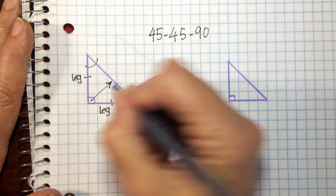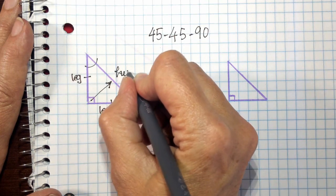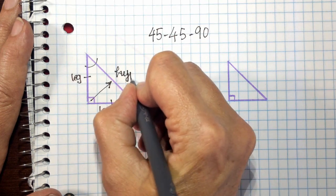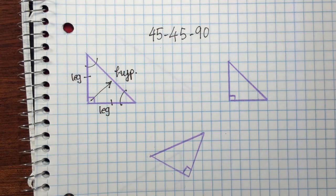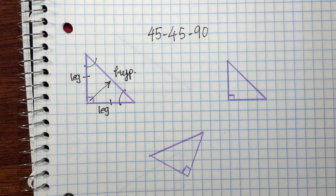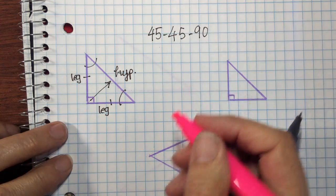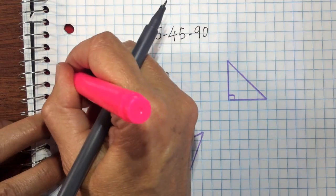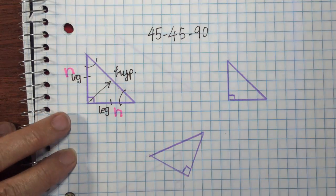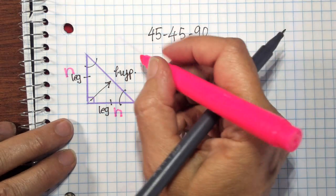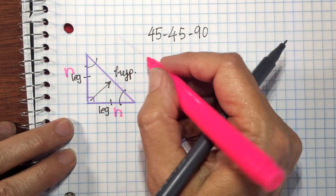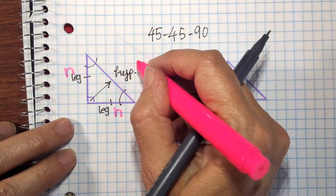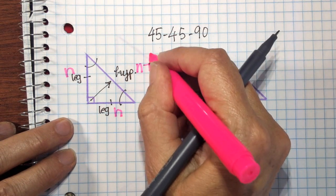This side is always your longest — it's your hypotenuse, and it's always across from the right angle. The relationship is: if one leg is n, the other leg is also n — they have to be equal to each other. And then the hypotenuse is n square root 2.